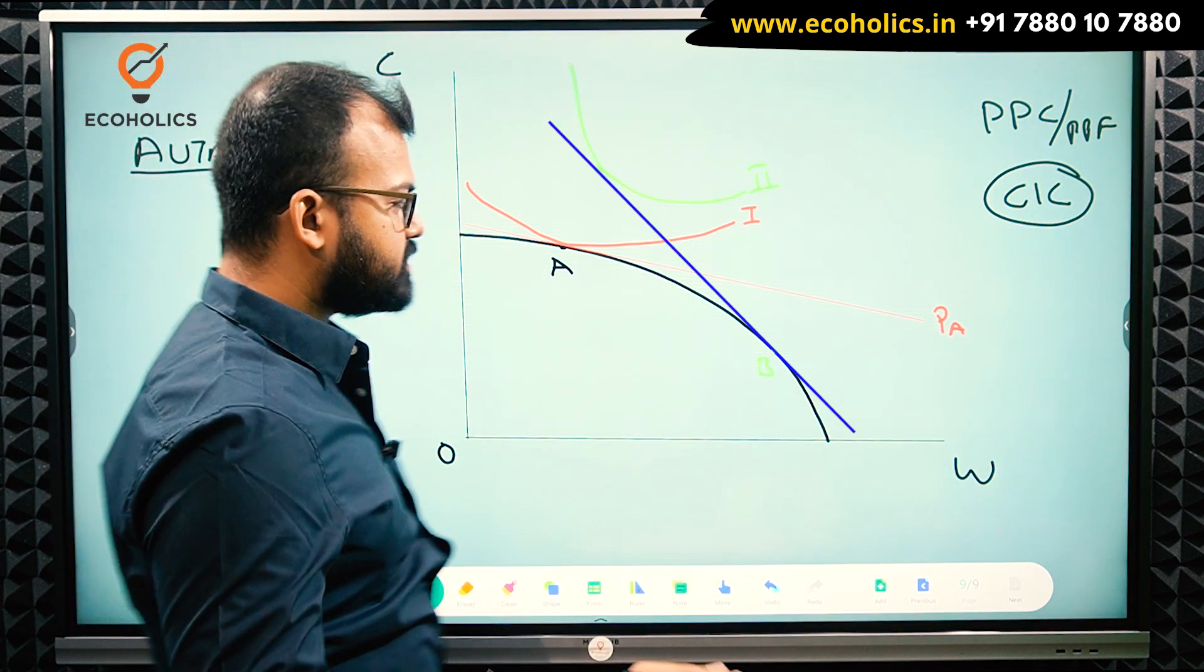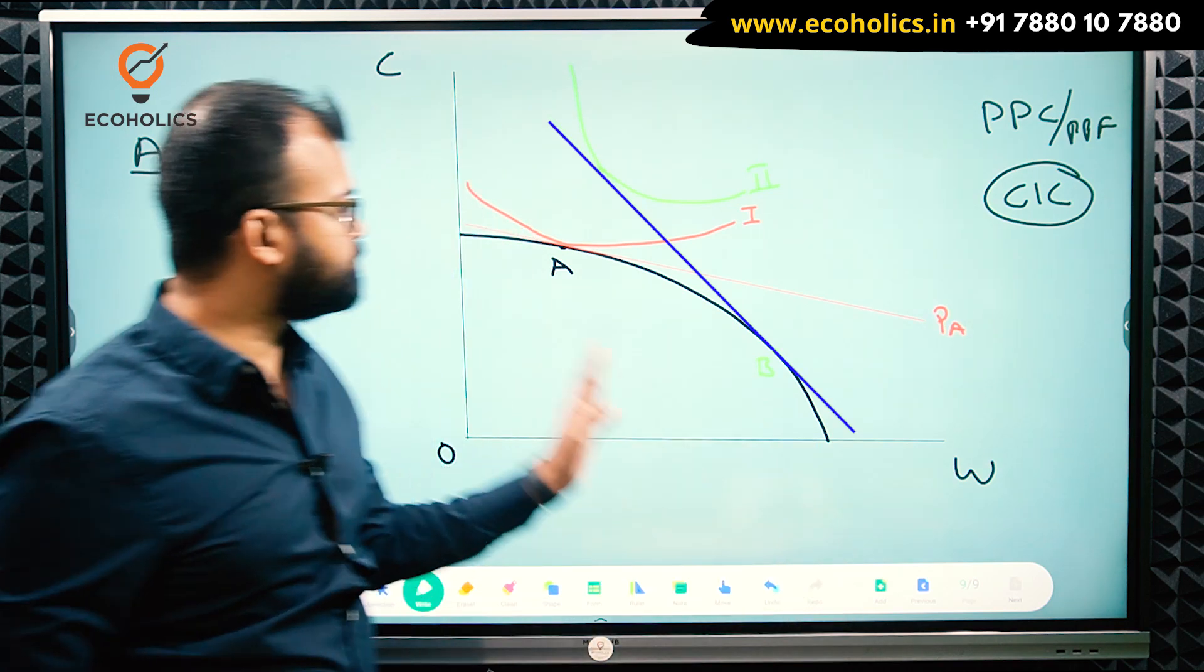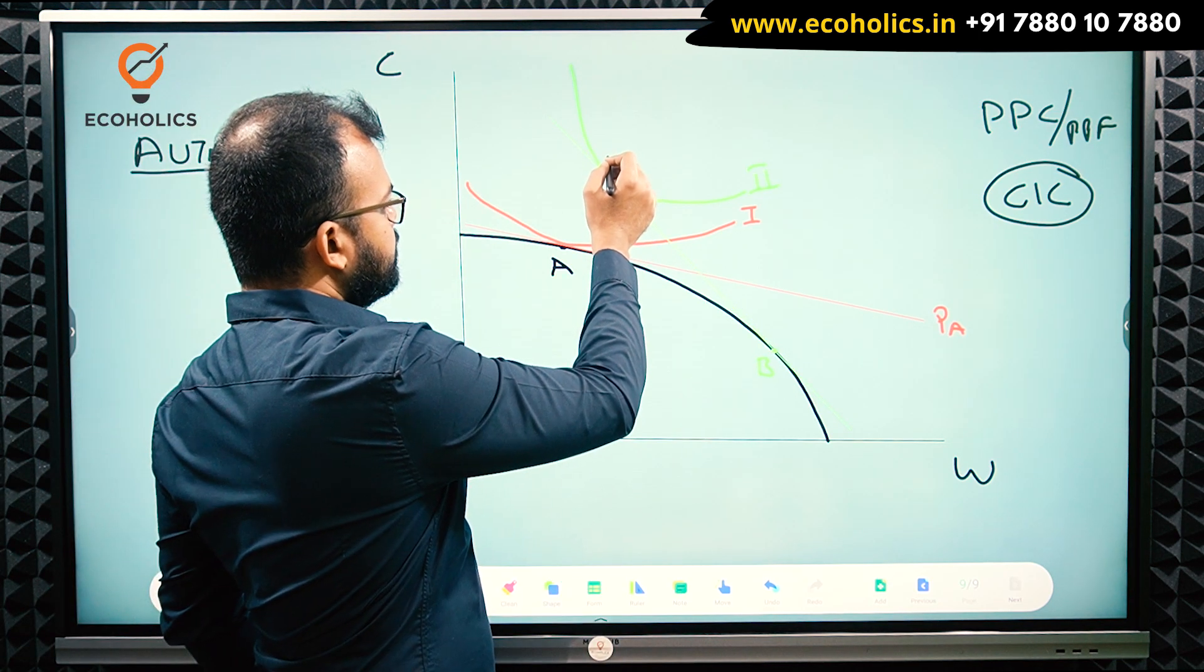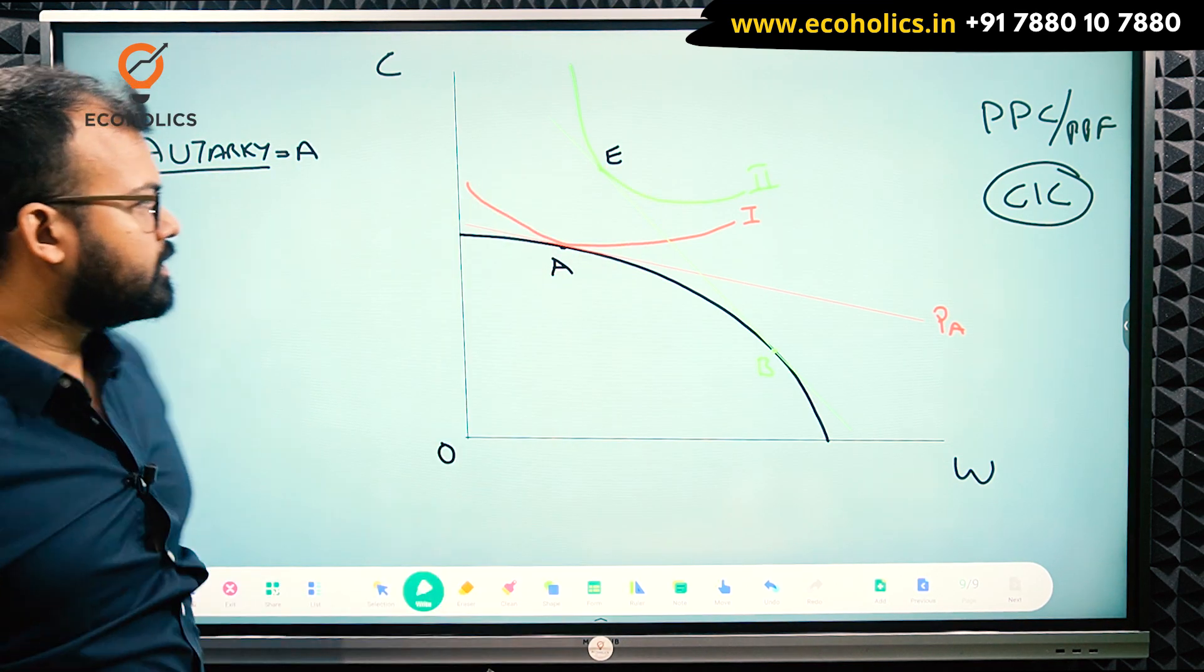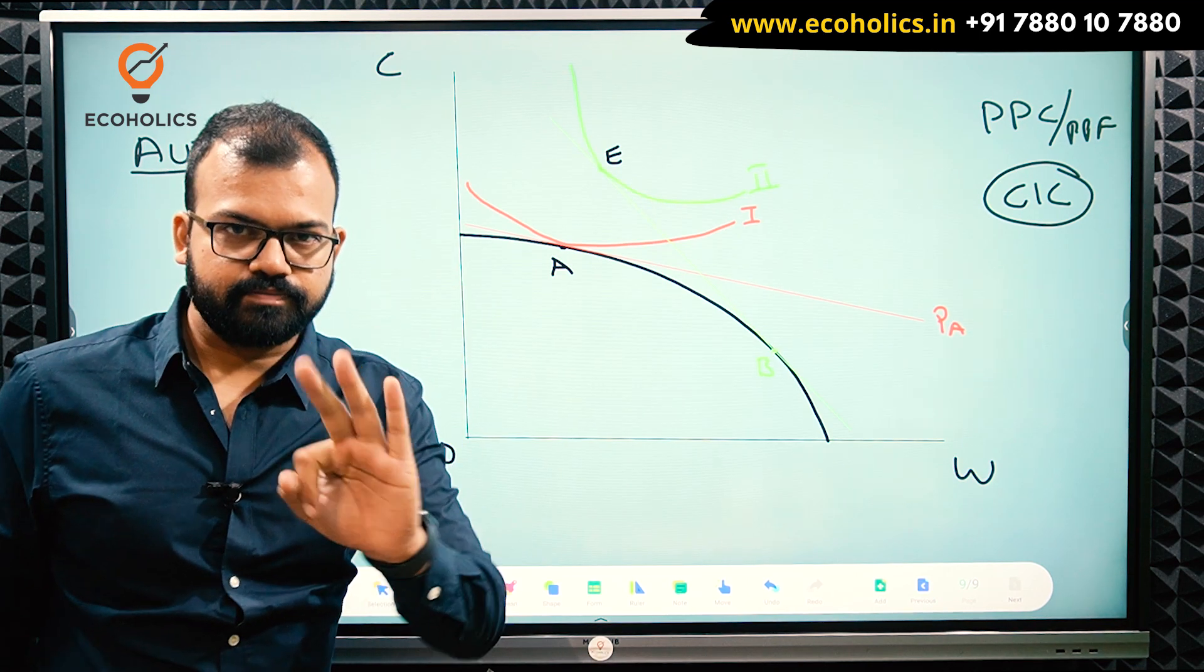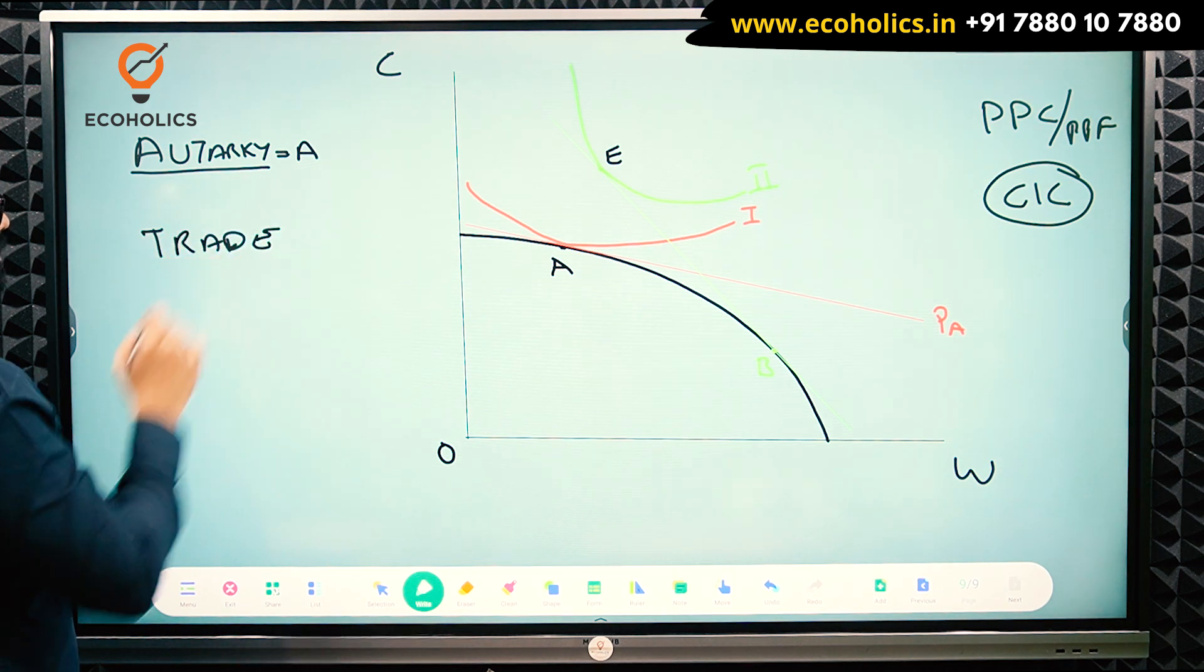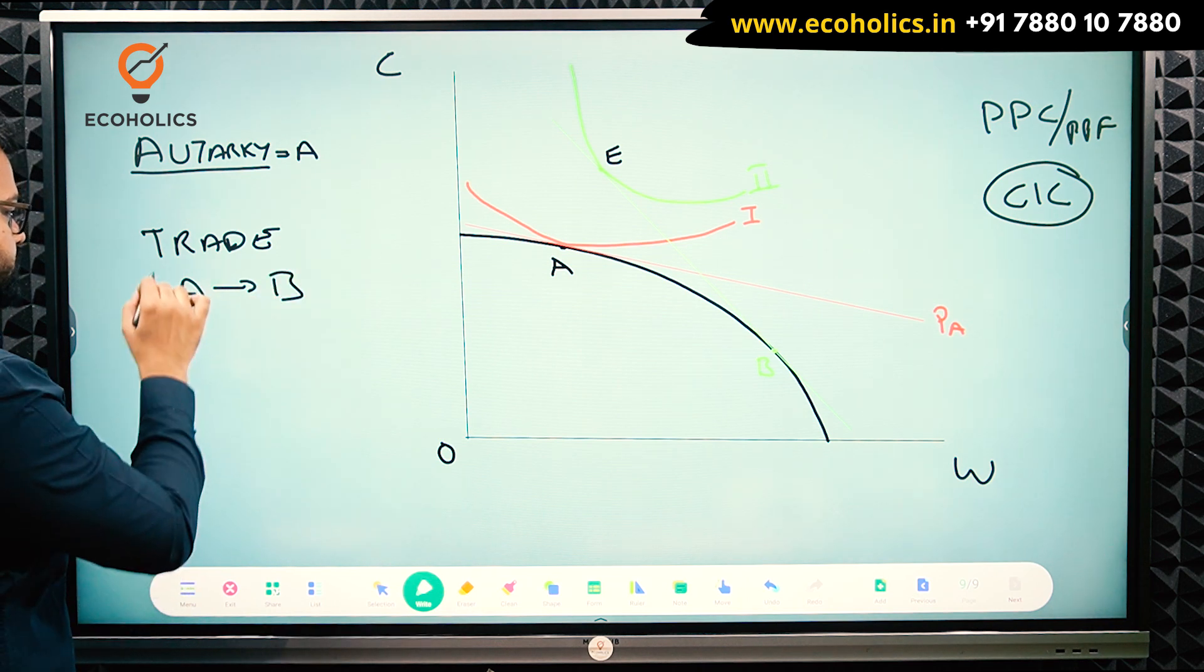If I ask you a very simple question, now India is moving its production from A to B point. This point I can say is maybe point E. Because C we have used. So A, B, and E point, there are three points. Now tell me, as soon as India engages in trade, trade goes up. India will move from A to B in production. This is the production.